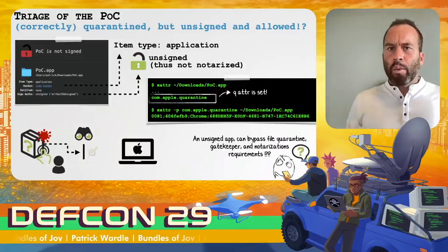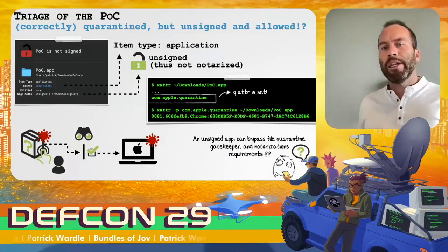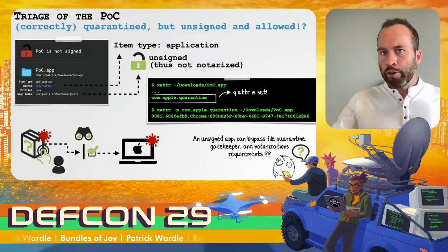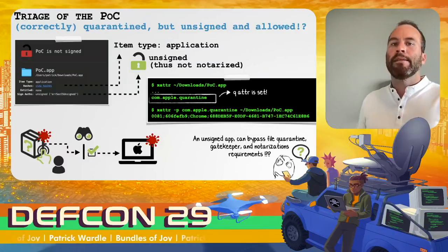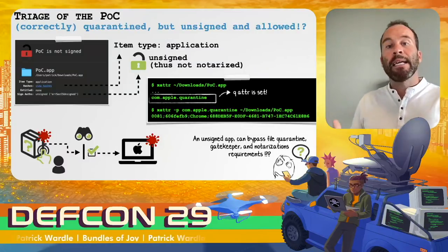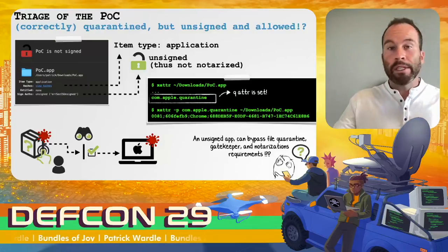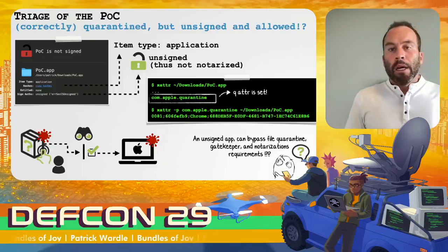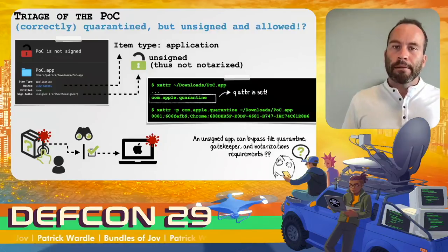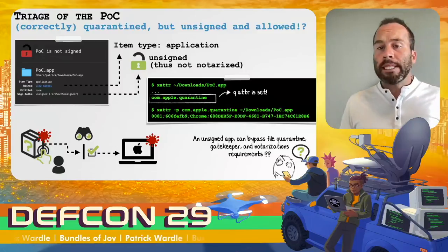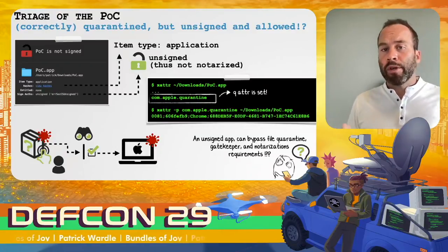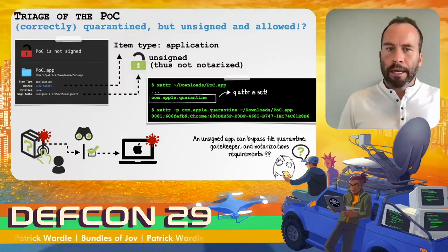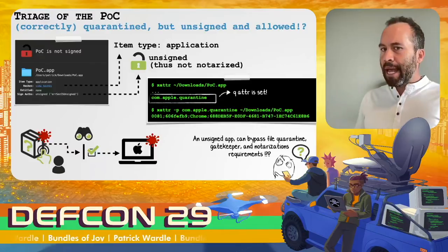The first thing I wanted to check was whether the quarantine attribute was being correctly set, because it is the indicator that tells the OS to perform its anti-infection checks — file quarantine, notarization, and gatekeeper. The proof of concept is not signed, which also means it's not notarized, but it does have the quarantine attribute set, confirmed via the xattr command. So it's not an issue with the quarantine attribute being mis-set. But this is almost more intriguing — we have an unsigned application that can bypass file quarantine, gatekeeper, and notarization requirements. How?